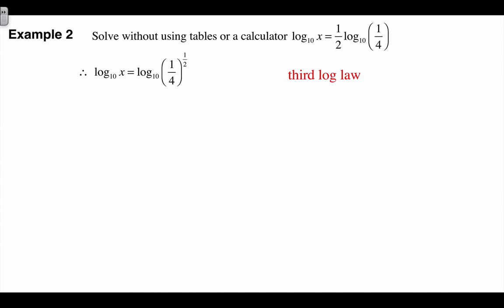And it just so happens that (¼)^(½), remembering that anything to the power of a half is the same as square rooting, becomes log₁₀(1/√4). Now, we can evaluate the square root of 4, which makes it a half. So log₁₀(x) equals log₁₀(½). Well, by definition, that means that x equals ½.